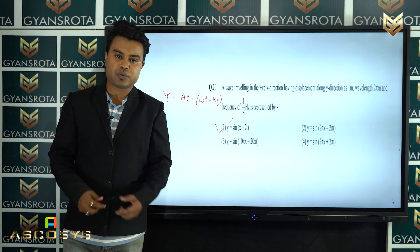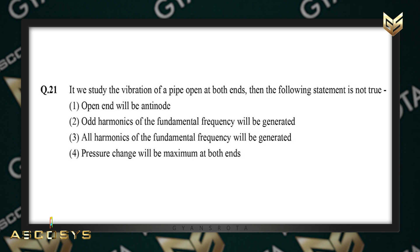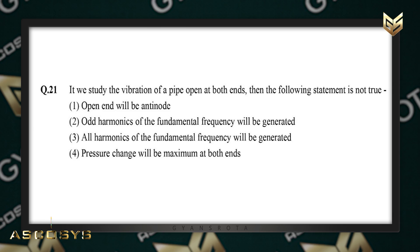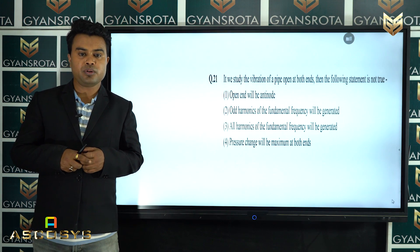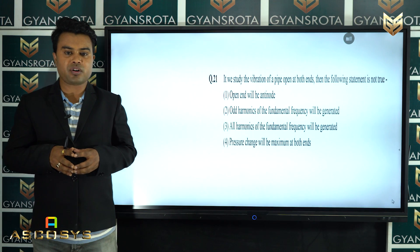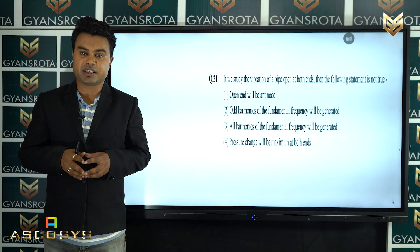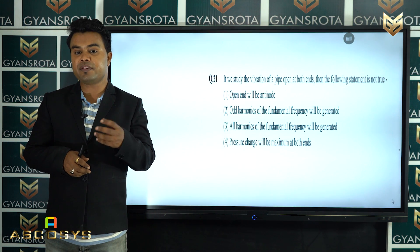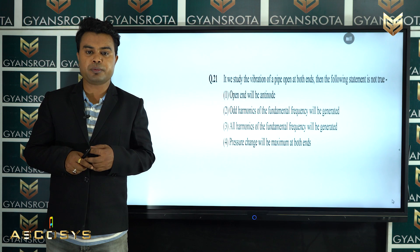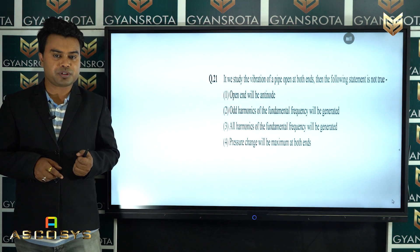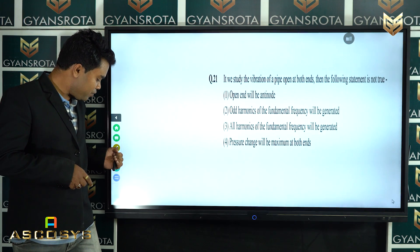Question 21: which of the following statements about a pipe open at both ends is NOT true? Open end will be an antinode — correct. Odd harmonics of the fundamental frequency will be generated — correct. All harmonics of the fundamental frequency will be generated — correct. Pressure change will be maximum at both ends — this is NOT correct, so option 4 is the answer.